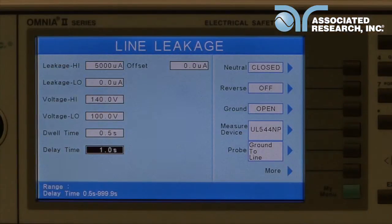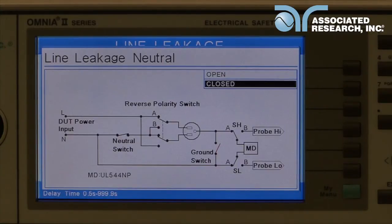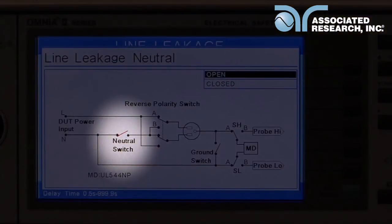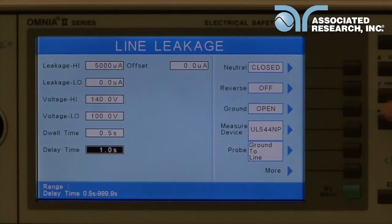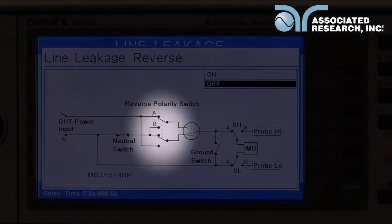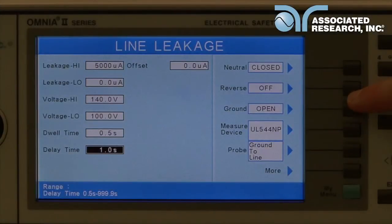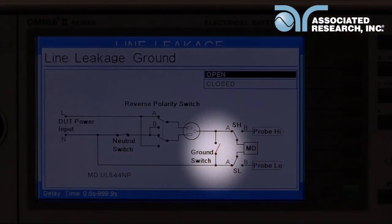For the line leakage test, you'll also need to set your fault parameters. Fault parameters simulate worst case conditions for a line leakage test and include open-neutral, reverse polarity, and open ground.